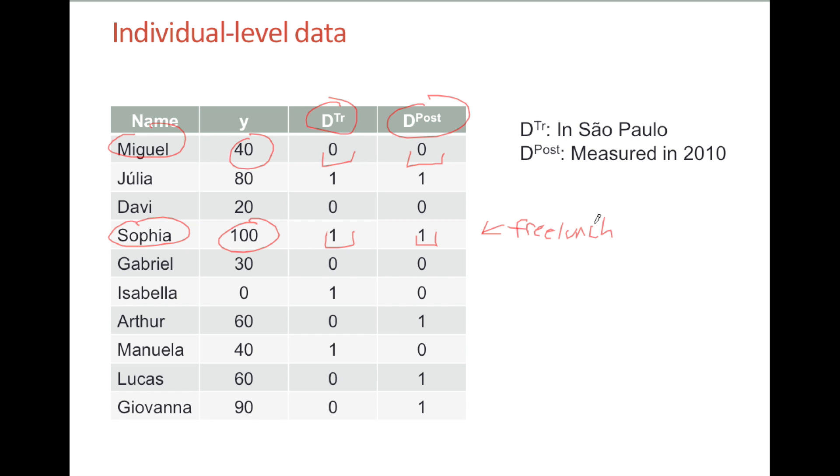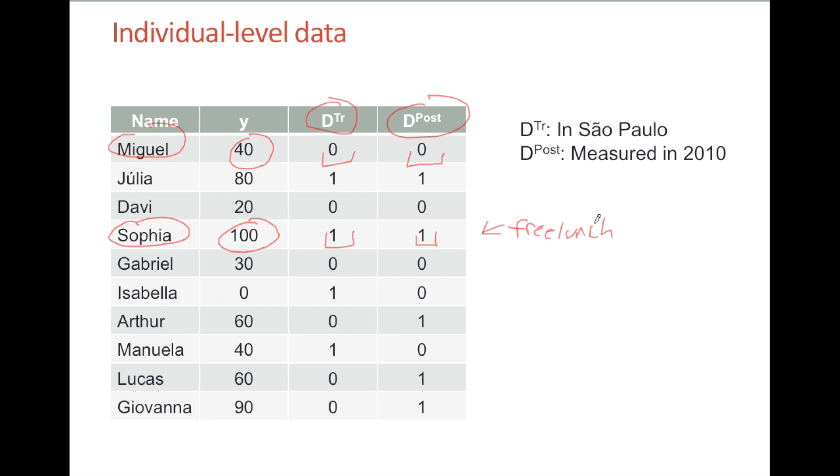Because we now have individual level data, we can also estimate the difference-in-difference using a plain old regression model. All we have to do is regress our outcome variable on the two dummy variables, DPOST, the dummy variable for whether the individual was measured before or after the program, and DTR, the dummy variable for whether or not the individual's in the treatment group, and the interaction of the two. The coefficient on the interaction is going to be our diff-in-diff estimate.